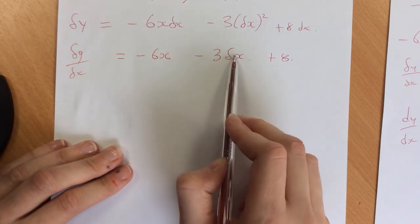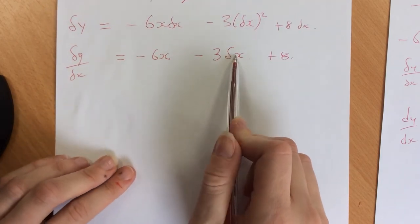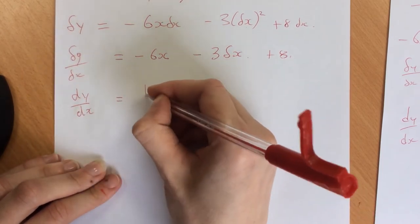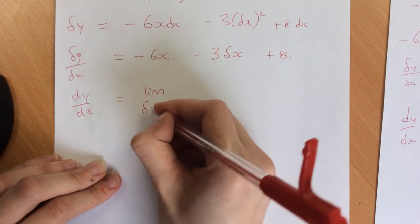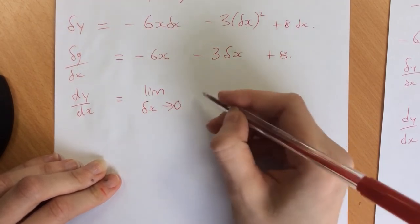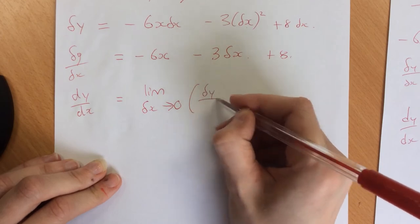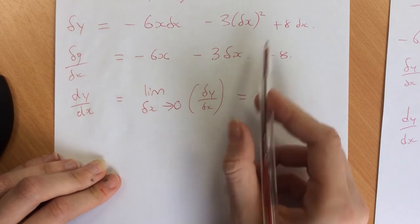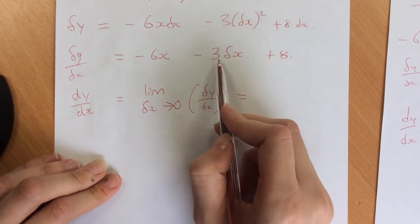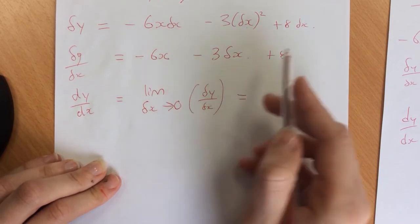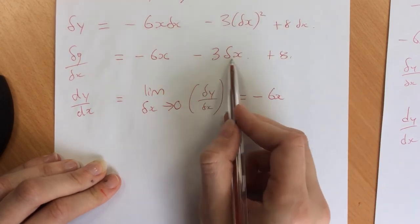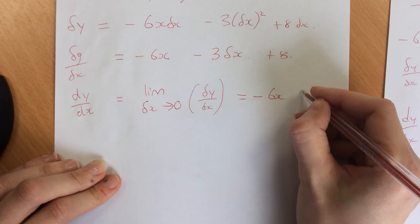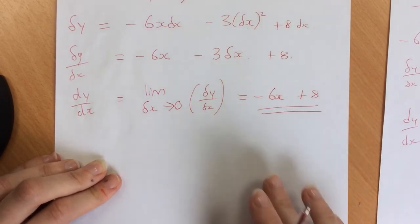I still want to get rid of this last delta x, and this is where we write: dy/dx equals the limit as δx goes to 0 of (δy/δx). This means that delta x has now become 0. This is the same as having -3 times 0, so we end up with -6x. This becomes 0, and then we've got +8 on the end. There's our final answer.